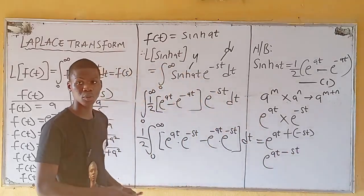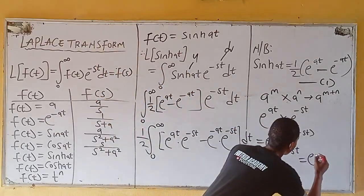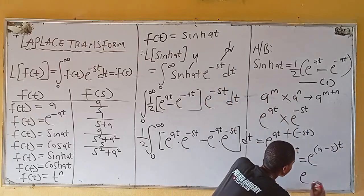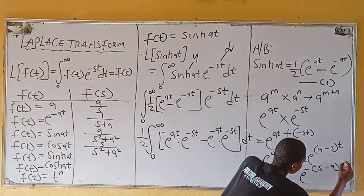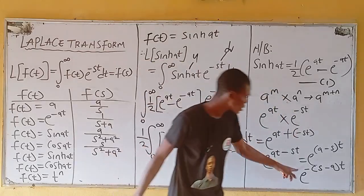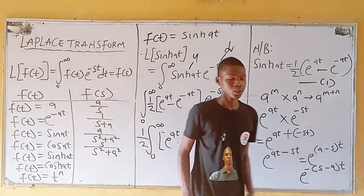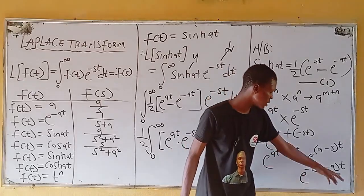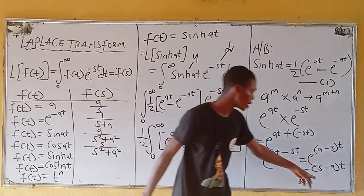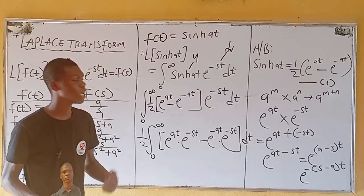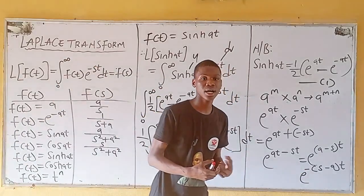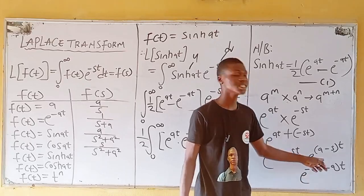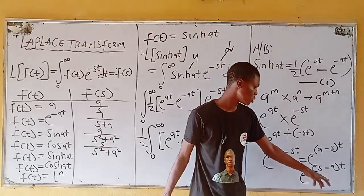We can also write e^((a-s)t) as e^(-(s-a)t). The reason we write it in this manner is that s is converging — meaning the value of s is greater than a. So we write the exponent with a negative sign in front of (s-a), ensuring s minus a is positive. We've seen this concept previously.